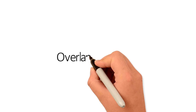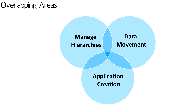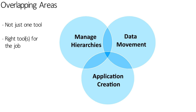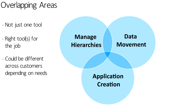Part of figuring out which tool to use is confusing because there are overlapping areas between some of these tools. The three main efforts for EPM applications are: how am I going to manage my hierarchies, how am I going to move data between applications, and how am I going to create and manage my applications. Ideally there would be one tool and one answer, but unfortunately it's not going to be just one solution — you'll need to figure out what's the right tool for the job, and that could differ across customers and clients.